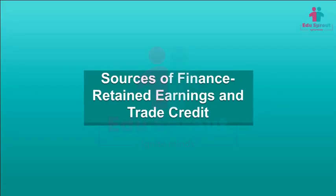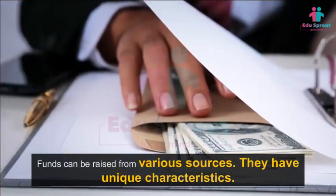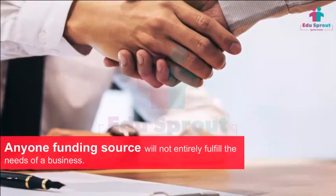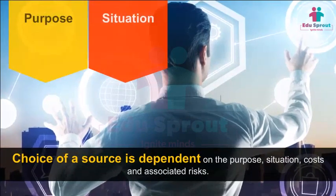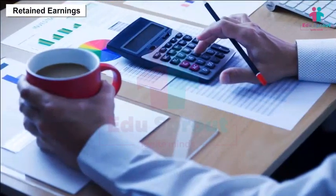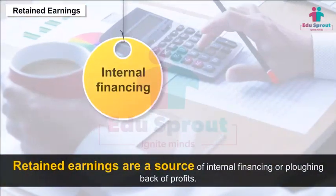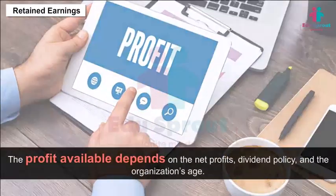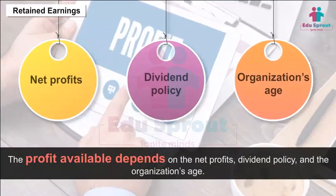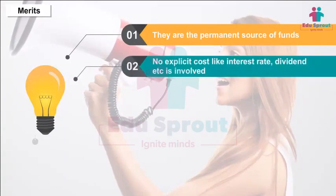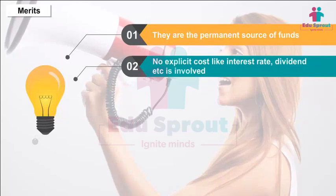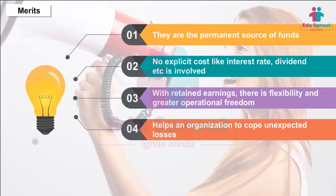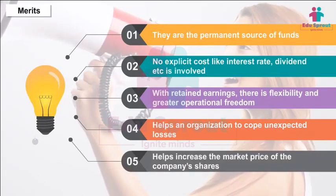Sources of Finance — Retained Earnings and Trade Credit. Funds can be raised from various sources with unique characteristics. No single funding source will entirely fulfill the needs of a business; the choice depends on purpose, situation, costs, and associated risks. Retained earnings are a source of internal financing — retaining a part of earnings for future needs. The profit available depends on net profits, dividend policy, and the organization's age. Merits: permanent source of funds, no explicit cost like interest or dividend, flexibility and operational freedom, helps cope with unexpected losses, and helps increase the market price of the company's shares.